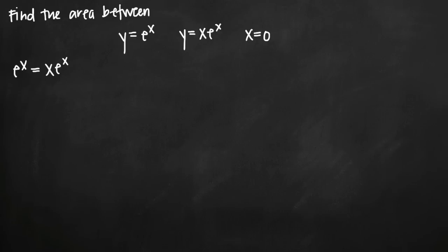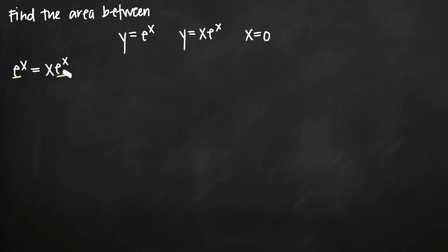We should immediately realize that we have e to the x on both sides, with the right side being multiplied by x. Since e to the x equals e to the x, the only possible value of x where this statement is true is one — because if x is one, then both sides are equal. If x is anything but one, the equation is false. So x equals one is an intersection point of these two curves.